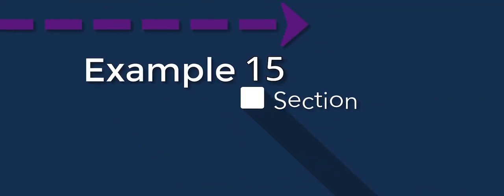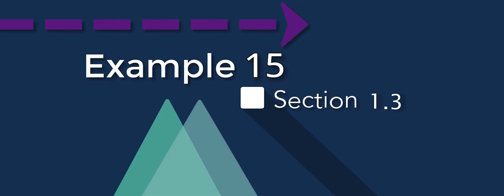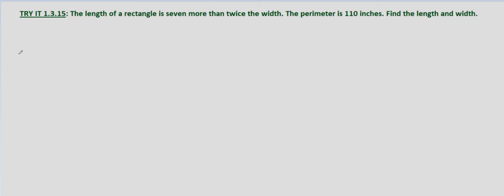So in this problem we're given that the length of a rectangle is 7 more than twice the width, and the perimeter is 110 inches, and we're asked to find the length and the width.